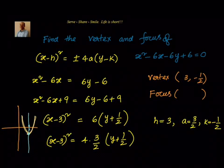Focus will be moving towards more positive, that means we have to add the a value. And axis of parabola is parallel to y axis, that means x coordinate is constant there. So I can go ahead and write down that is 3. And coming to the y coordinate it will be -1/2 + 3/2 because the focus is on top of the vertex here in this direction.